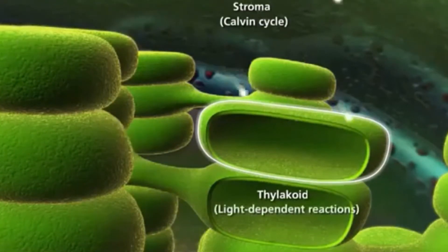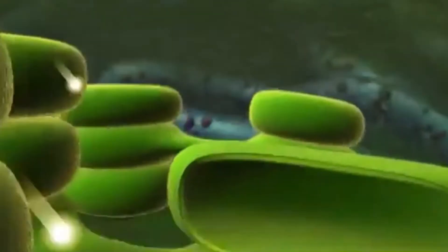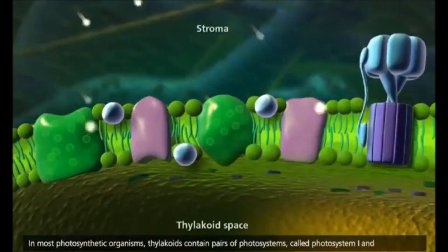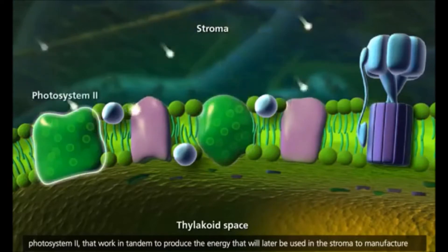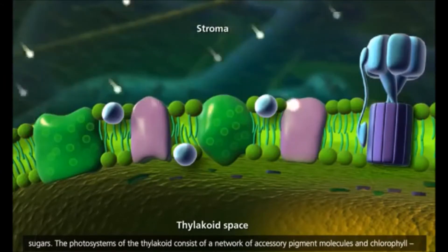The light-dependent reactions occur in the thylakoid. It is here that conversion of light energy to chemical energy is initiated. In most photosynthetic organisms, thylakoids contain pairs of photosystems, called photosystem-1 and photosystem-2, that work in tandem to produce the energy that will later be used in the stroma to manufacture sugars.